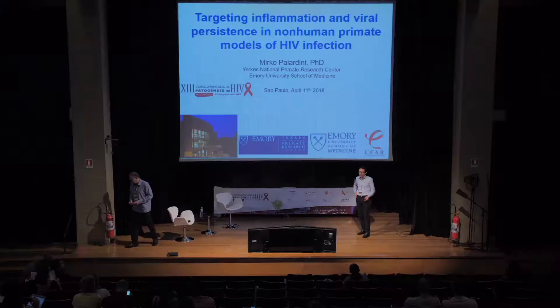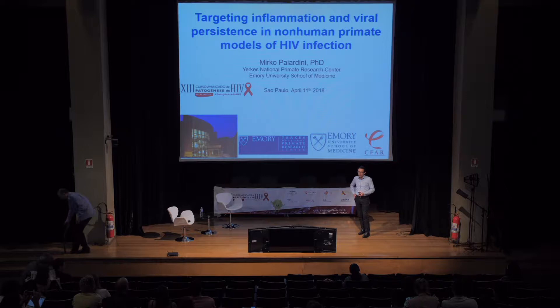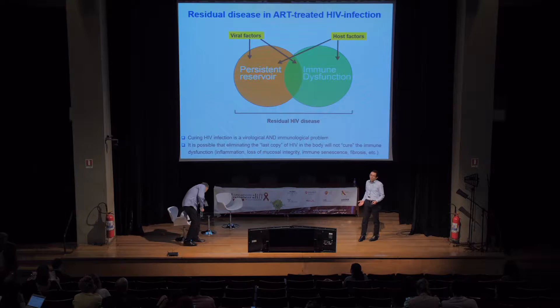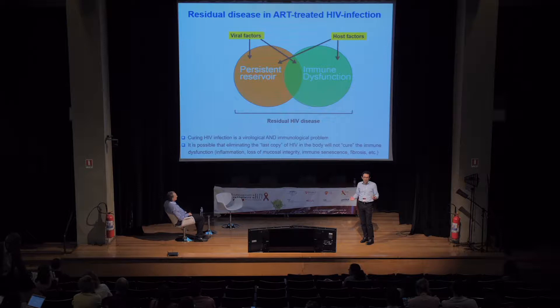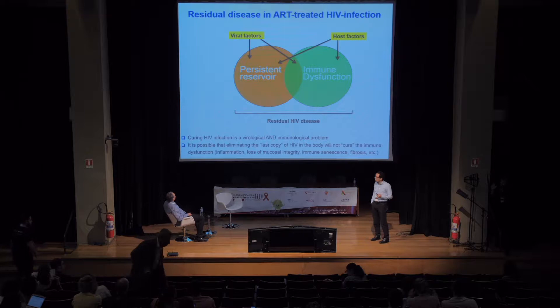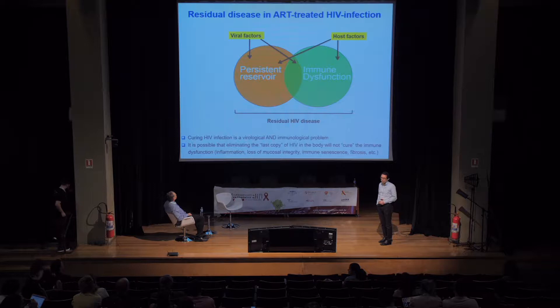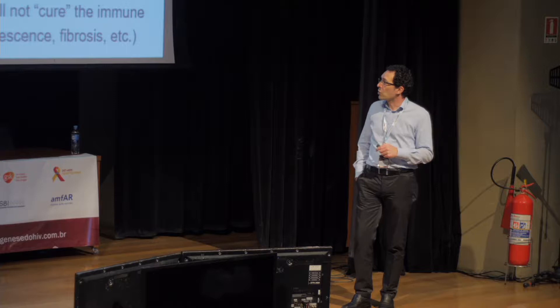I'm going to give you an update on some interventions we are doing in the lab to target inflammation and viral persistence using the monkey model of HIV infection. As you all know, the impact of antiretroviral therapy has been amazing in HIV infection with a big impact on morbidity and mortality. However, there are still two important issues even in people who respond well to ART: the persistence of immune dysfunction and the persistence of a viral reservoir.